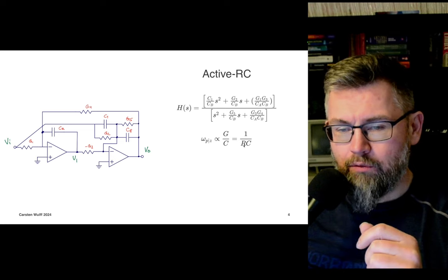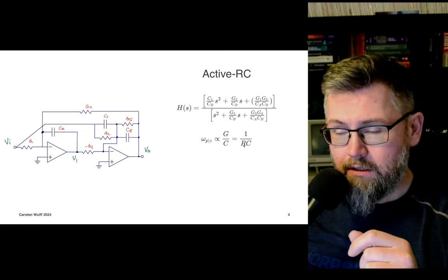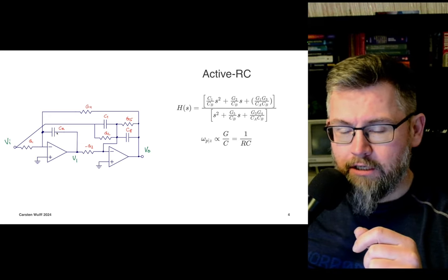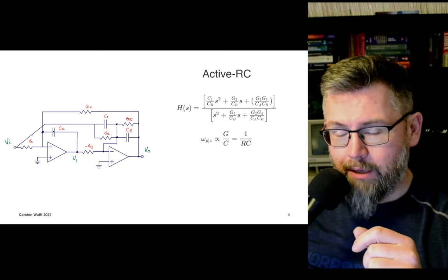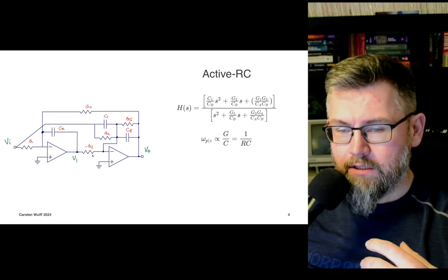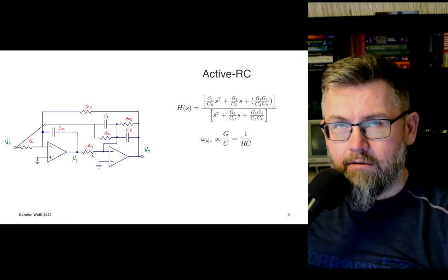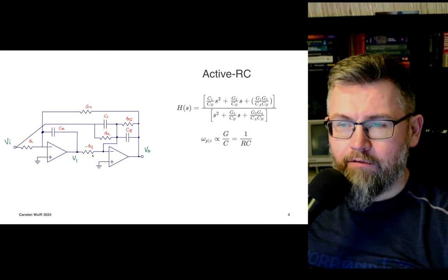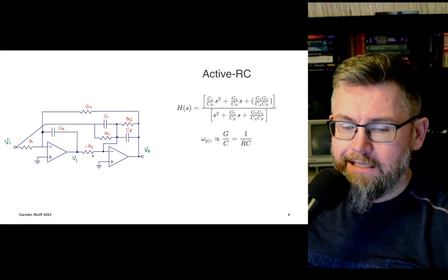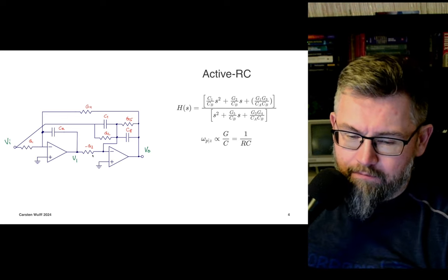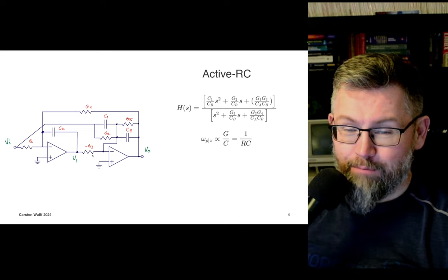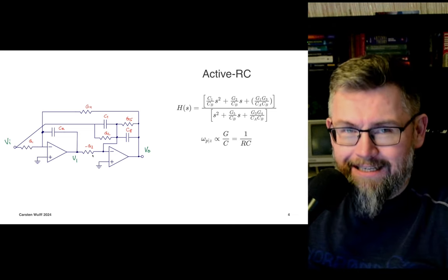Quite often, if you need an accurate pole-zero frequency, you will have to trim — either by changing the number of capacitors in parallel, or by having multiple resistors where you can connect resistors in and out. Because every single chip we make from the same mask set is the same, any circuits we want to use to modify our pole and zero frequencies has to be in the chip.